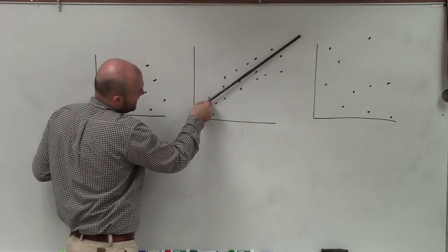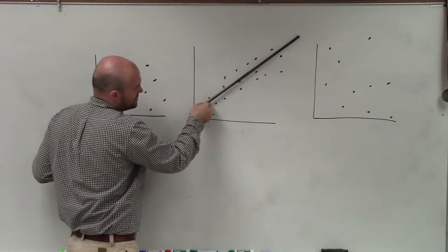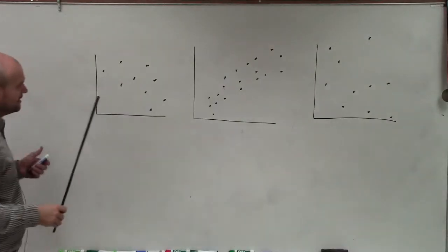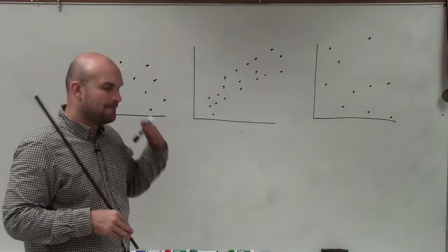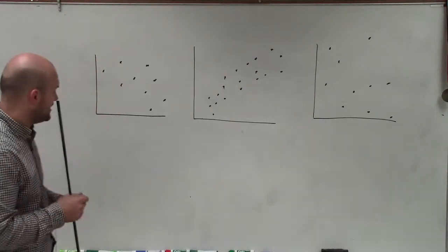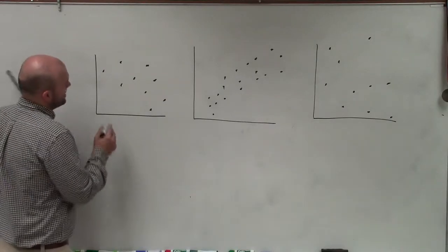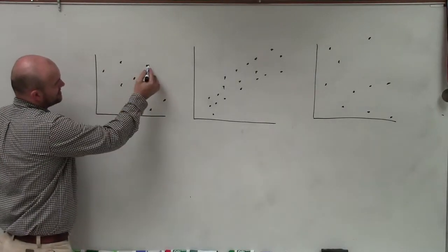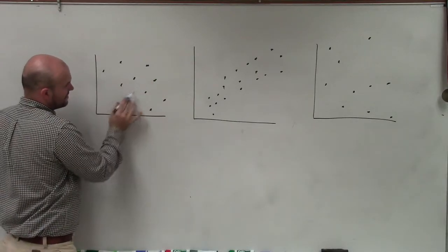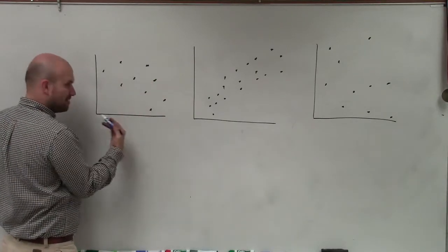We want to place our line somewhere in between our information that is going to create a pattern of the movement of our data. Now, one rule of thumb that I always like to think about is you always want to keep the same number of points below and above the line.